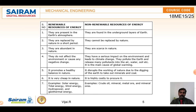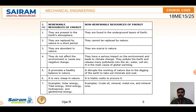Examples of renewable energy sources that are reusable: solar energy, wind energy, hydro energy — that is hydropower — and geothermal energy. These are the examples for renewable energy. For non-renewable sources, crude oil, minerals, and other resources we extract from the earth are called non-renewable energy resources.